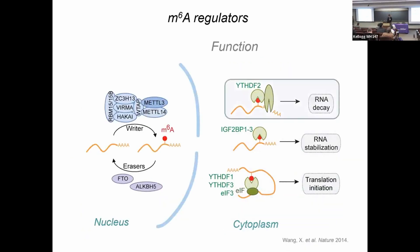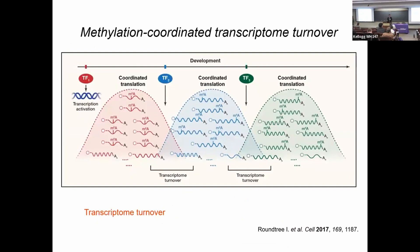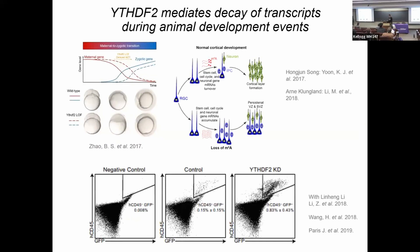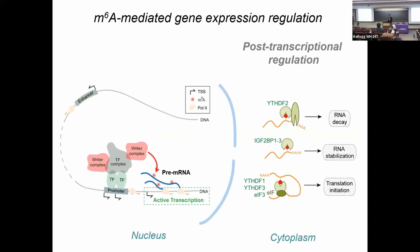The reader protein YTHDF2 mediates decay of messenger RNAs. What it really does is mediate a transcriptome switch: whenever a cell wants to differentiate to the next stage, M6A-driven coordinated decay clears transcripts that dictate the previous cell state. Examples include maternal-to-zygotic transition, neurogenesis, and stem cell expansion. If you get rid of YTHDF2, you impair cell state transition and can dramatically expand hematopoietic stem cells. This has been recognized as one of the key mechanisms regulating mRNA stability.